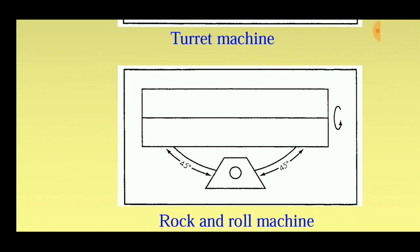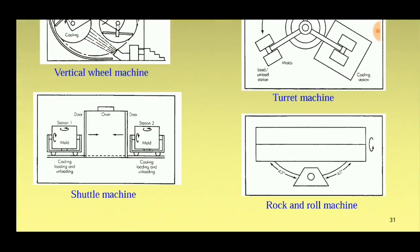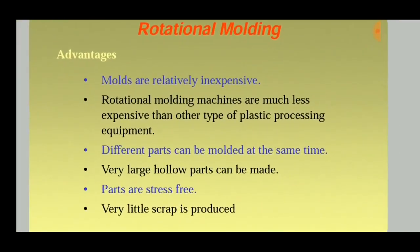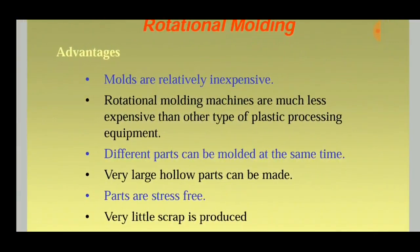The fourth method is the rock and roll machine. In this machine, the barrel is rotated along its own axis where the plastic is deposited on it. It is heated inside an oven and finally taken out.